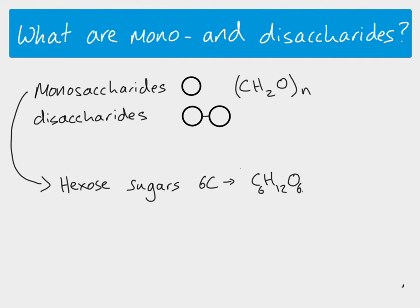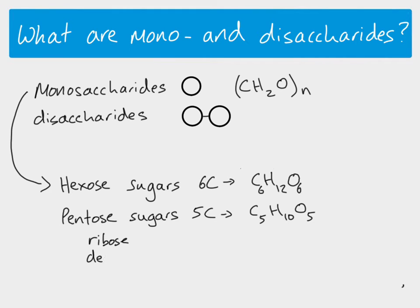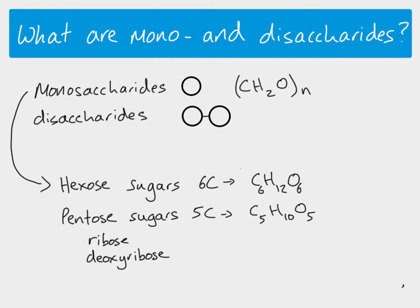Another group of monosaccharides are the pentose sugars, which have five carbons, giving the specific molecular formula C₅H₁₀O₅. Examples of pentose sugars are ribose and deoxyribose — ribose is the pentose sugar found in RNA, and deoxyribose is the pentose sugar found in DNA. There's also another very common group called triose sugars, which contain three carbon atoms. Importantly, hexose and pentose sugars have enough carbon atoms to actually form a ring, and we'll look at how the molecular formula is turned into a structural formula in a moment.